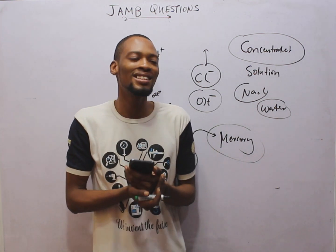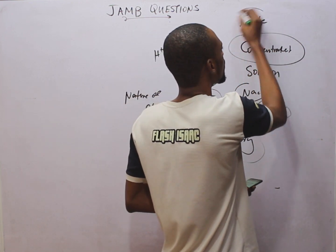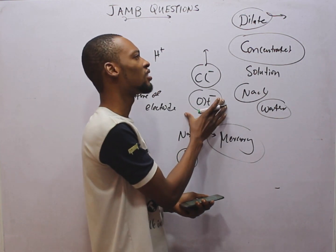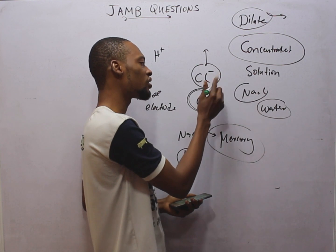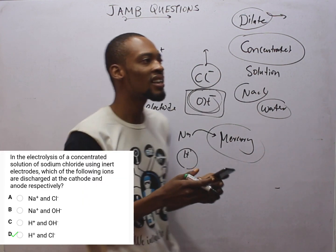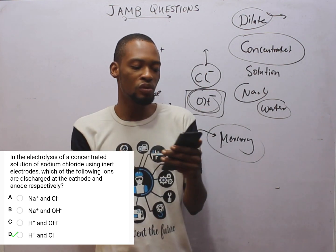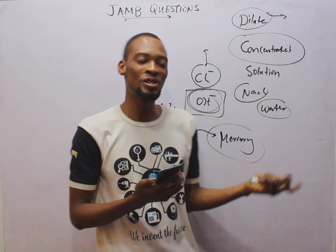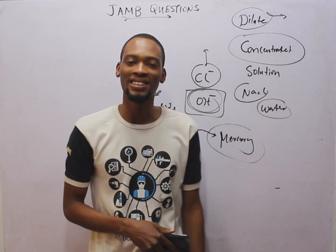If the question had said dilute sodium chloride instead: at the anode, OH⁻ would be discharged instead of chlorine. At the cathode, H⁺ would still be deposited. That is it for electrolysis JAMB likely questions. I hope you found this class helpful. Thank you and have a wonderful day.